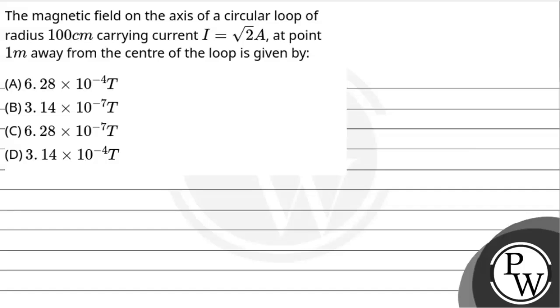Hello, let's head out the question. The question says: The magnetic field on the axis of a circular loop of radius 100 cm carrying current I equals √2 amperes, at a point 1 meter away from the center of the loop, is given by.